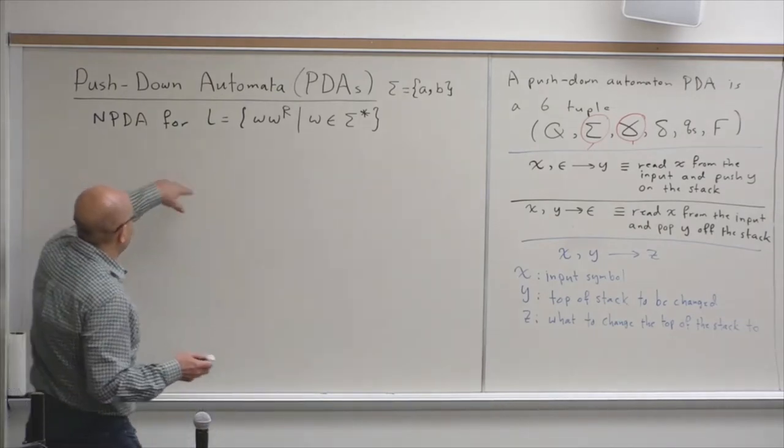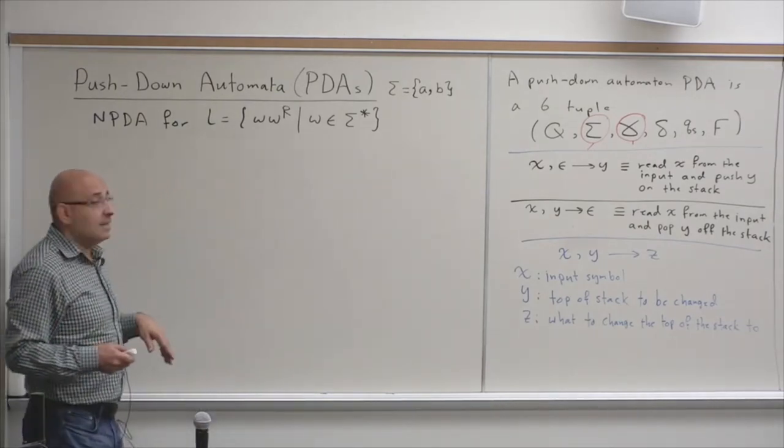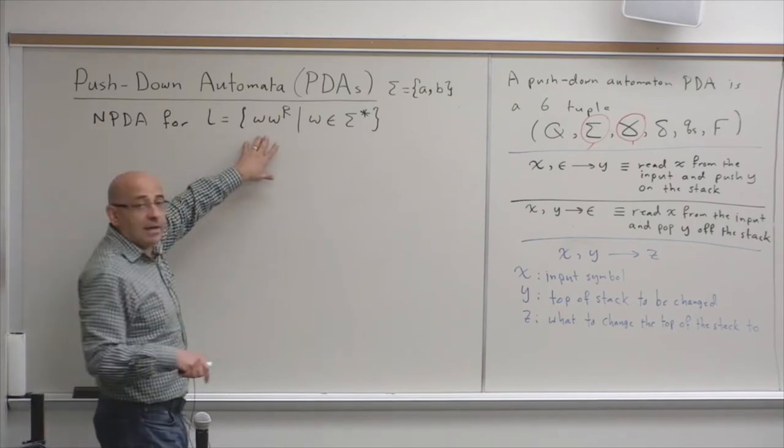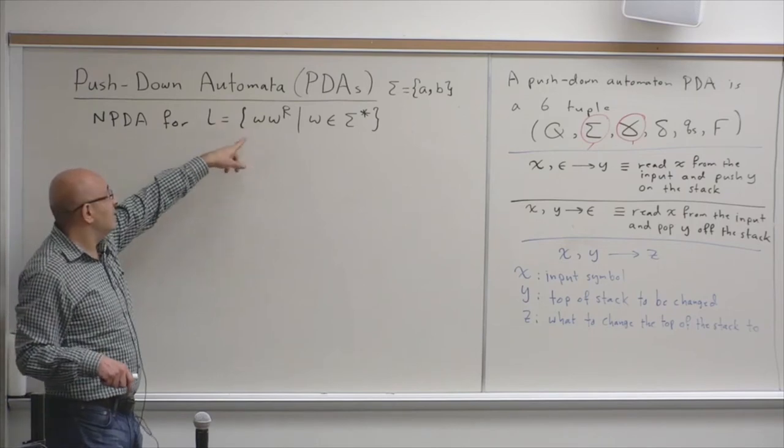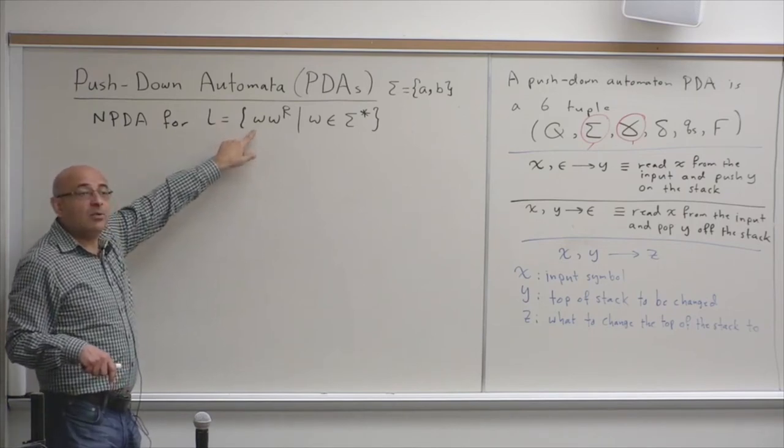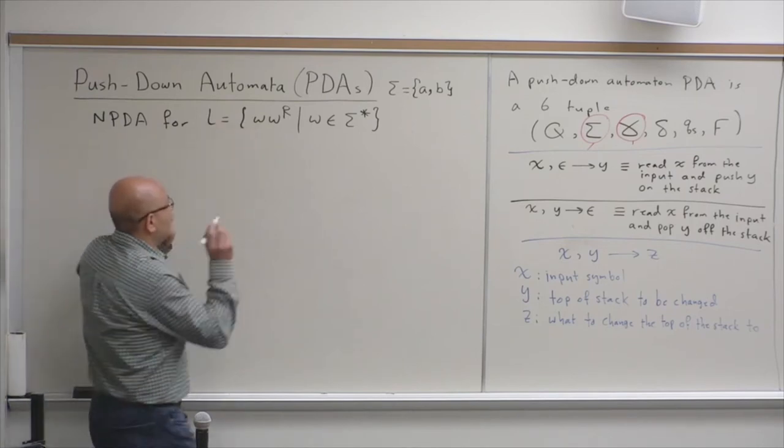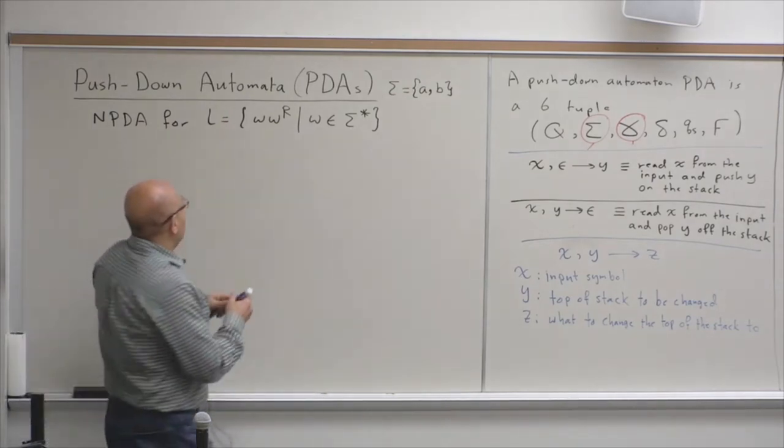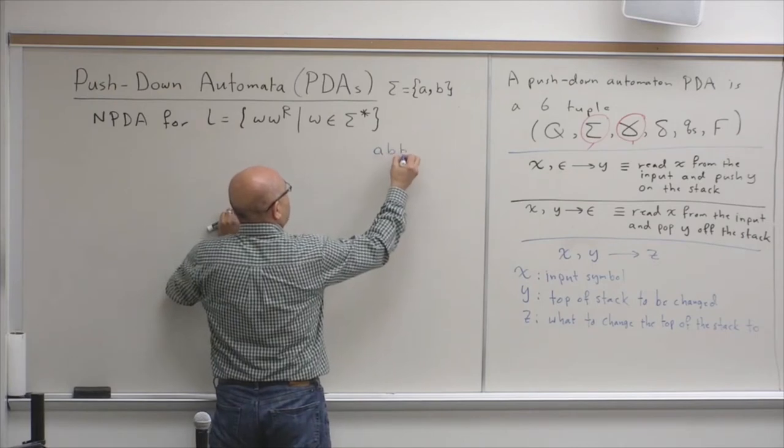So, you can generate a regular language using a regular expression or a regular grammar. Now we need to push down automaton for this. The idea is very simple. It's very similar to that. But here, we need to match. Let's take an example, string like A, B, B, A.